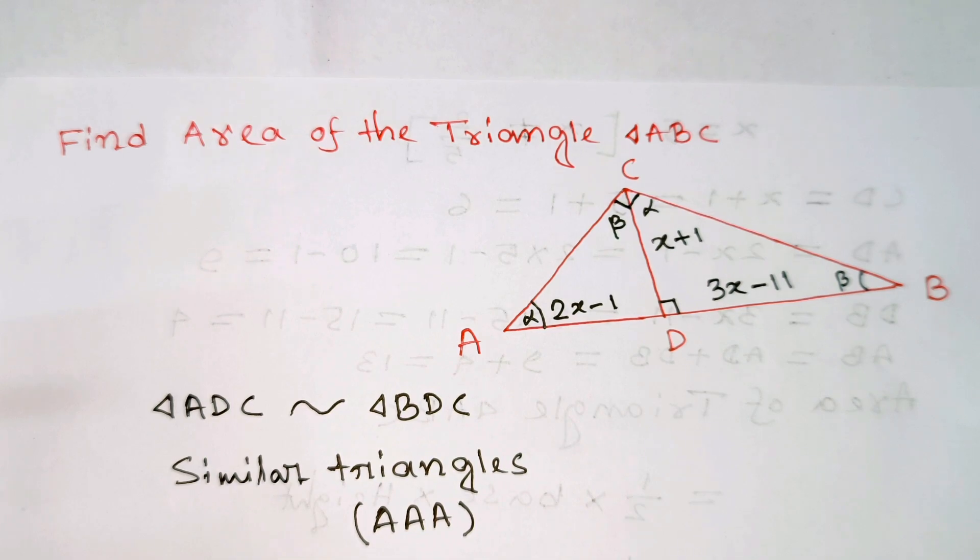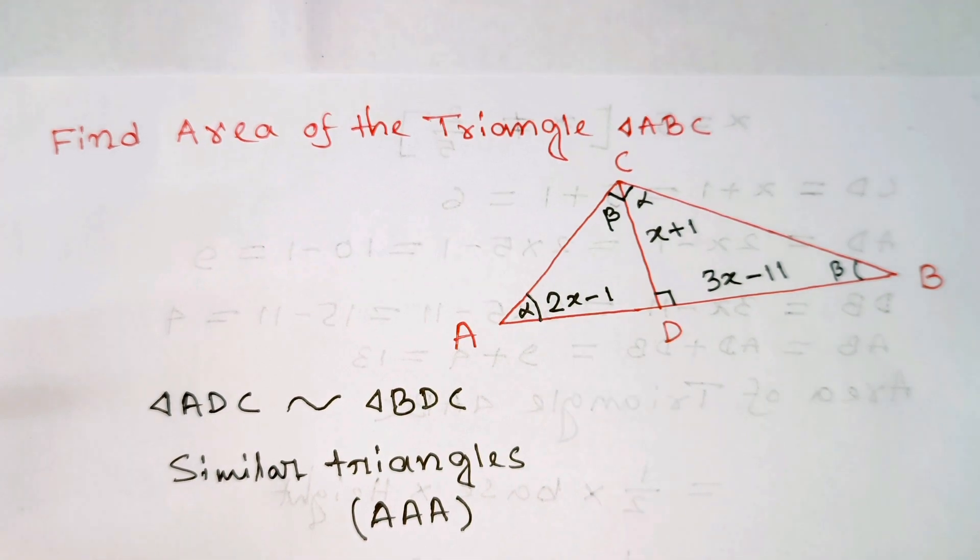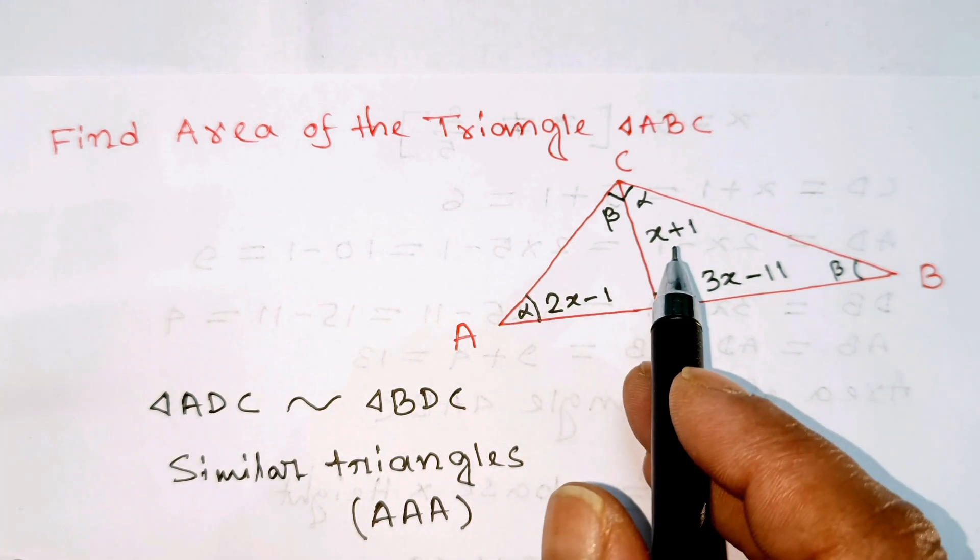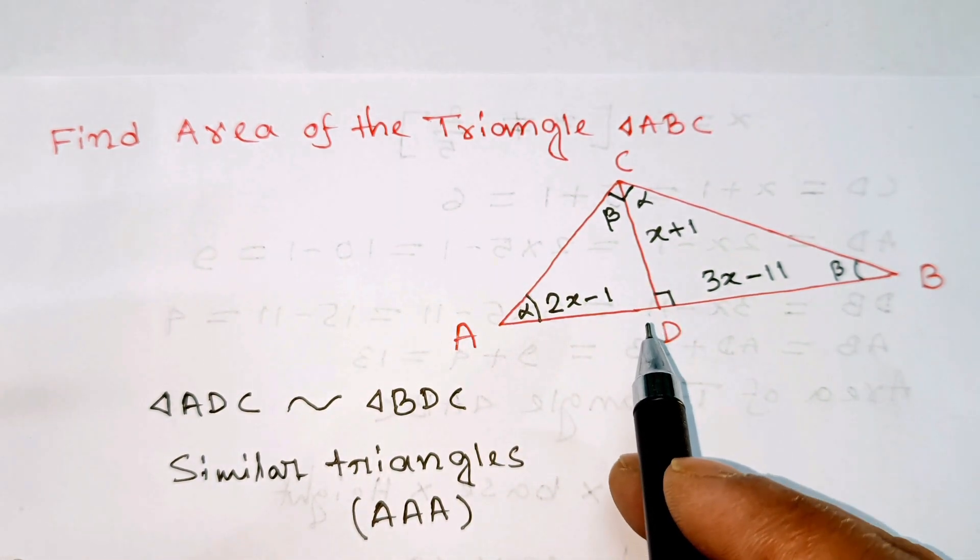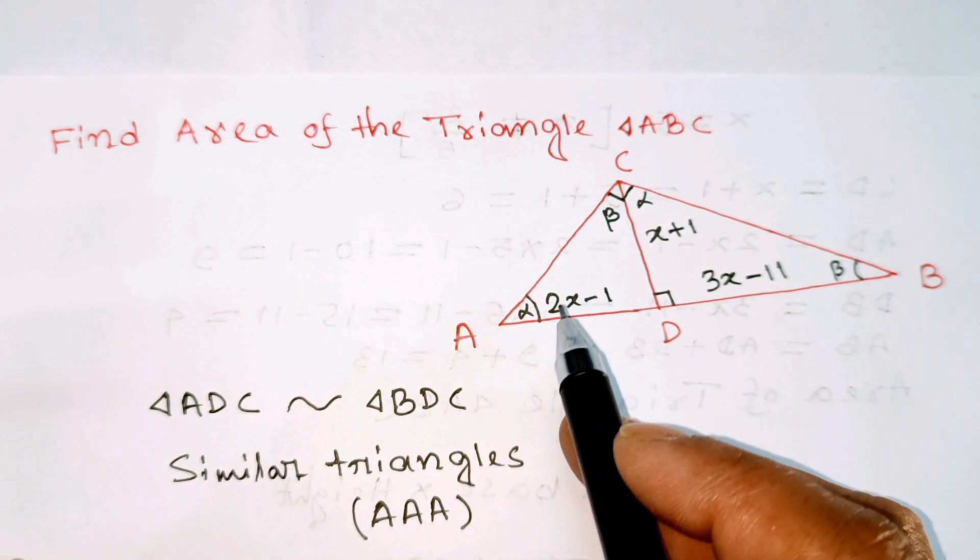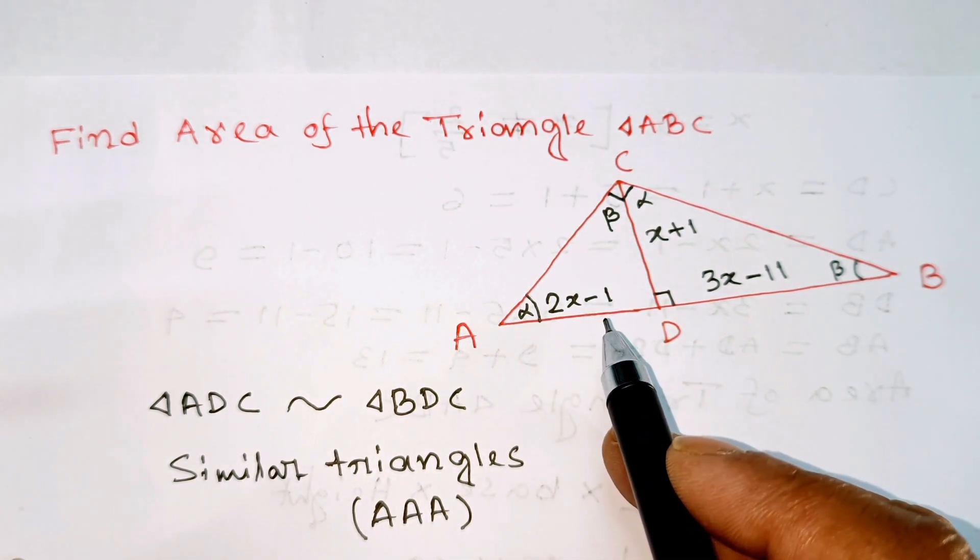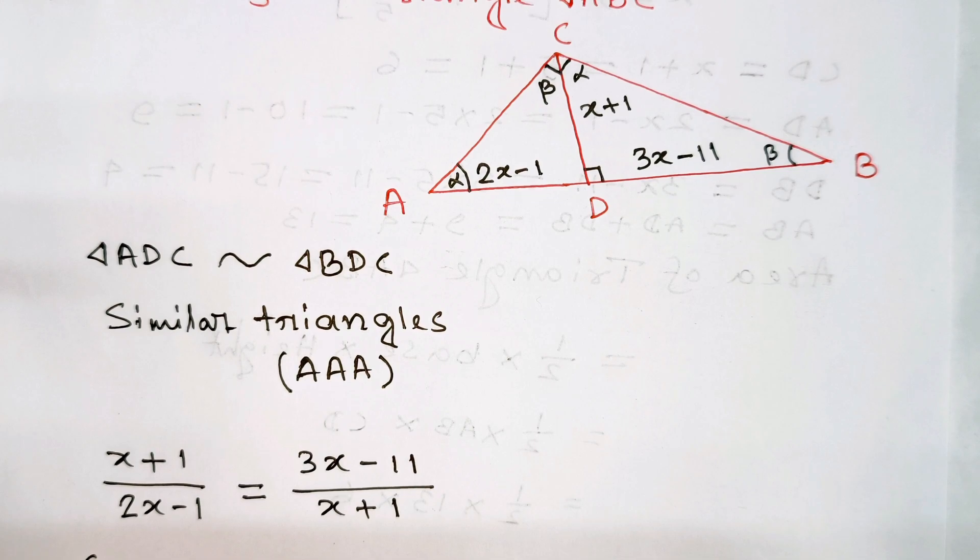Therefore, we are going to have properties. In other words, the ratio of the side that is opposite to angle alpha is x plus 1, and the side opposite to angle beta is 2x minus 1.